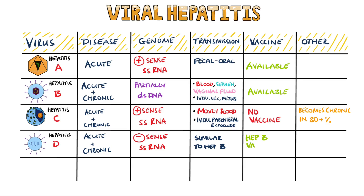There is no specific vaccine for hepatitis D, although the vaccine for hepatitis B is protective. Hepatitis D is also known as a sub-viral satellite because it can only replicate in the presence of hepatitis B.